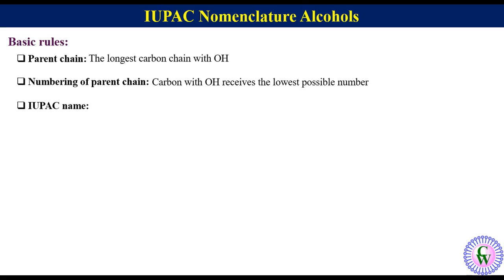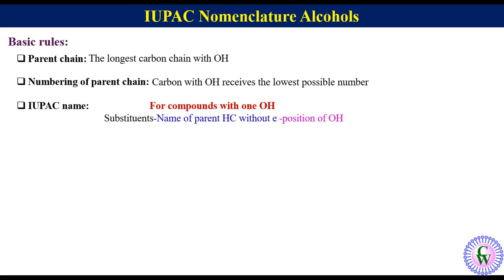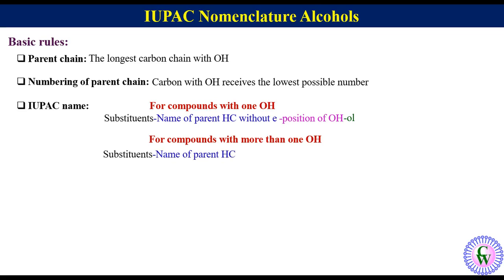The third point is regarding the structure of the IUPAC name. For compounds with one OH, it is: substituents, name of parent hydrocarbon without 'e', position of OH, and then 'ol'. For compounds with more than one OH, it is: substituents, name of parent hydrocarbon, positions of OH in increasing order separated by commas, numerical prefixes like di, tri, or tetra depending on the number of OH groups, and then 'ol'.